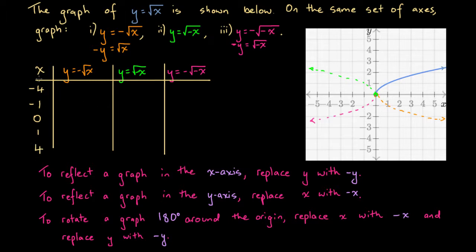For the orange function at x equals minus 4: y equals minus the square root of minus 4. We run into difficulty here because we can't have the square root of a negative number — so y is undefined. At x equals minus 1, we get minus square root of minus 1, which is also undefined. So x equals minus 4 and minus 1 are not part of the domain for this function.